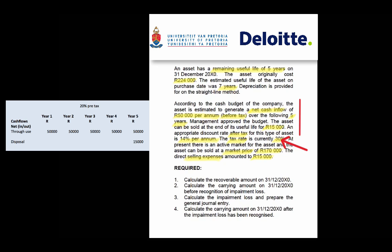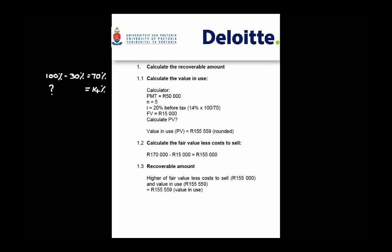The fair value less cost to sell information is given towards the end of the information. In the suggested solution, remember to get into the good habit of looking for indications of impairment. Although not provided in this example as it is rather simplistic, it is a good habit to be in.